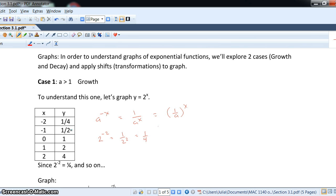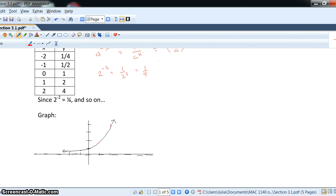So, negative 1 would give us 1 half, 2 to the 0 is 1, 2 to the 1 power is 2, and 2 squared is 4. So, let's take a look at the graph. Let us scroll down. And here we go.